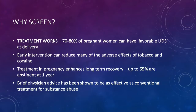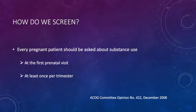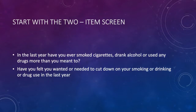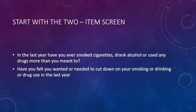Every pregnant patient should be asked about substance use at their first visit and at least once per trimester. The easiest approach is the two-item screen: In the last year, have you ever smoked cigarettes, drank alcohol, or used any drugs more than you meant to? Have you felt you wanted or needed to cut down on your smoking, drinking, or drug use in the last year? In two random samples, no to both gave a 7.3% chance of a current substance use disorder; one yes gave 36.5%; and two yes answers gave 72.4%.